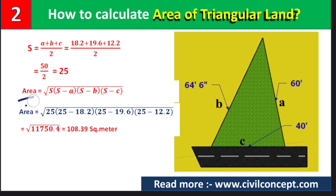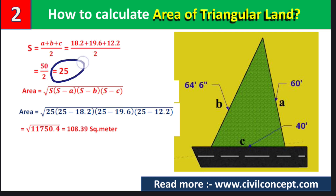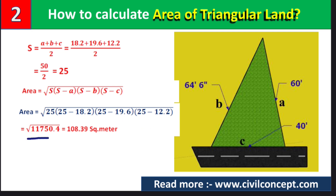Now applying the area formula: area equals √(s(s−a)(s−b)(s−c)). Substituting the values: s = 25, so we calculate 25 × (25 − 18.2) × (25 − 19.6) × (25 − 12.2), which gives us √11750.4. After calculating, the result is 108.39 square meters.